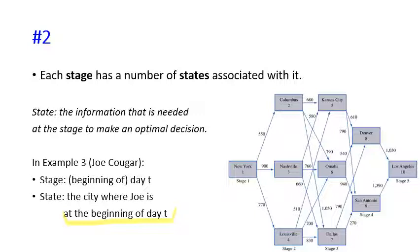This information is important because it tells you what you can or cannot do. For example, if Joe is in New York, the decision cannot be going to Los Angeles within one day, because from New York within one day he can only reach Columbus, Nashville, and Louisville. By knowing that Joe is in New York, he can make the correct decision. He cannot choose to go to Los Angeles within one day because it is simply impossible.